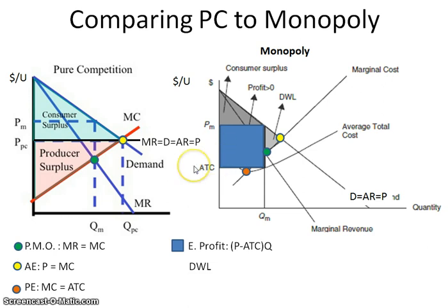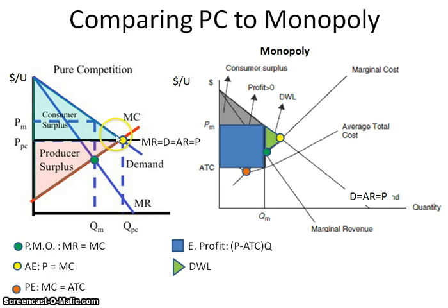With regard to dead weight loss, there is no dead weight loss when you're in a perfectly competitive firm because that is where you have the right amount of consumer and producer surplus. However, when a perfectly competitive market gets turned into a monopoly, what you would see is this loss of consumer and producer surplus. Because you were at an output for the quantity of the perfectly competitive, but then because it got changed into the monopoly, you have this difference in quantity which takes away from both the consumer and the producer surplus. Consumer surplus is much smaller for the monopoly than for the perfectly competitive, and you have a dead weight loss with a monopoly that you wouldn't have for the perfectly competitive firm.